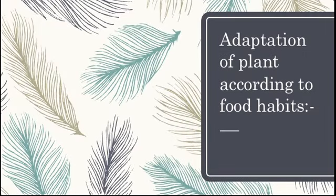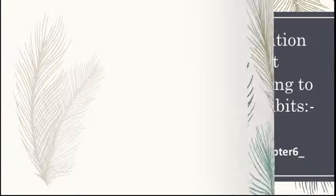Hello dear students, let us continue our chapter: Plants and Environment. In the last class we learned about adaptations of aquatic plants. Today we shall learn about adaptations of plants according to food habits. Plants which produce food have green leaves and a well-developed root system. Leaves are positioned in such a way that they receive maximum sunlight.